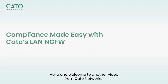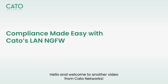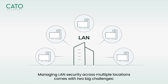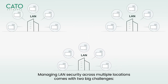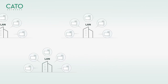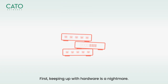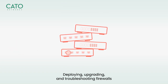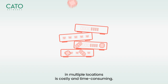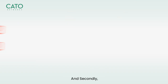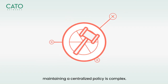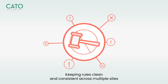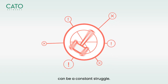Hello and welcome to another video from Cato Networks. Every LAN requires full-time protection. Managing LAN security across multiple locations comes with two big challenges. First, keeping up with hardware is a nightmare — deploying, upgrading, and troubleshooting firewalls in multiple locations is costly and time-consuming. And secondly, maintaining a centralized policy is complex. Keeping rules clean and consistent across multiple sites can be a constant struggle.